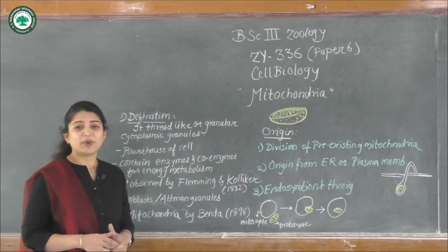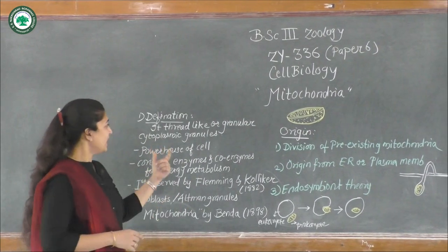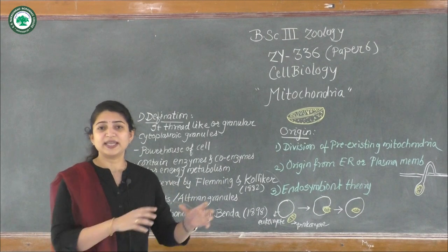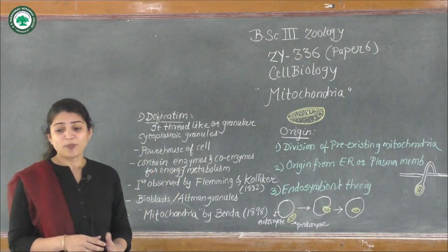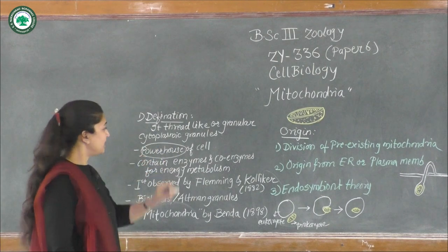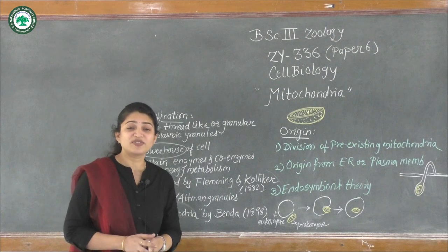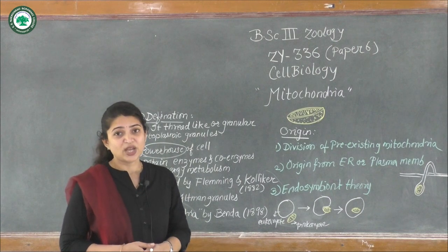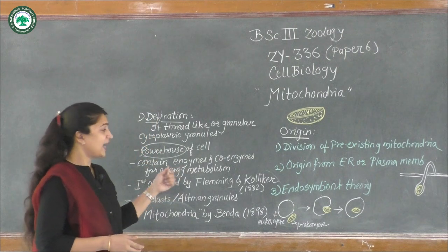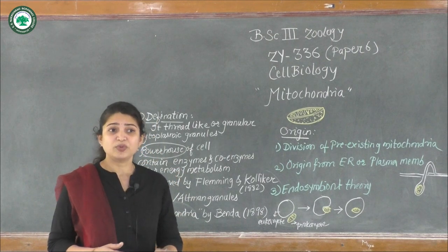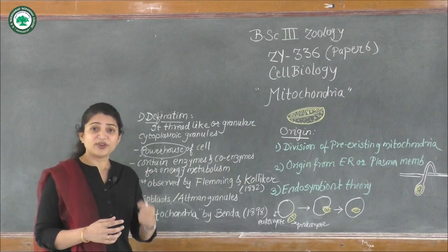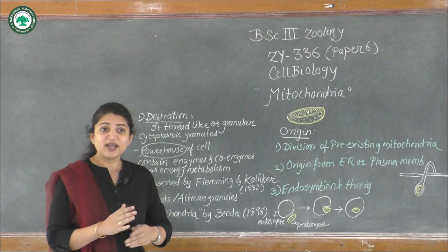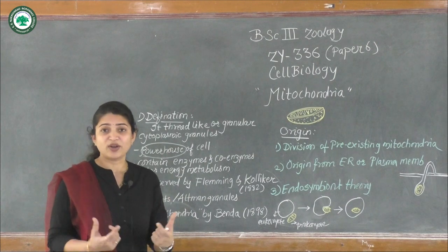Mitochondria are thread-like or granular substances present in the cell. They are called the powerhouse of the cell, as they give energy to all the metabolic activities or functions carried out in the cell. Mitochondria contain coenzymes and different kinds of enzymes to carry out reactions that generate ATP, and that energy is utilized to power all kinds of cell organelles.